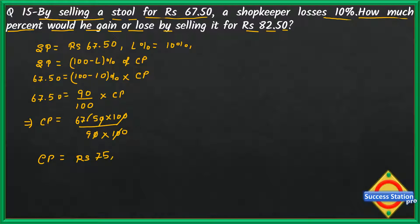Cost price is ₹75. Now for the second part: how much percent would he gain or lose? We need to find gain percent or loss percent. The selling price given in the second part is rupees 82.50. We need to understand that cost price is constant in this question — if he sells at ₹67.50 there is loss, and if he sells at ₹82.50 we need to find whether it's profit or loss. Cost price is constant.